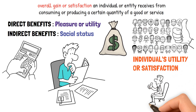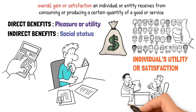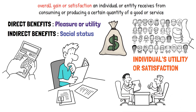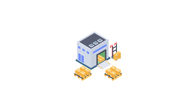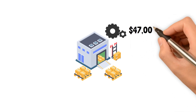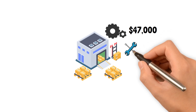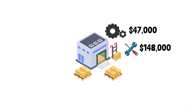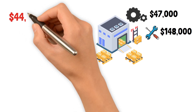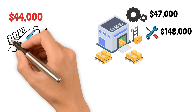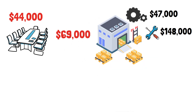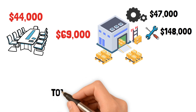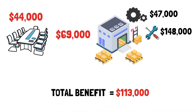However, it is vital to consider the total benefit when making decisions to ensure that the decision or action is in the best interest of the individual or entity involved. For example, assume a company intends to install new management software for its warehouse. The software will cost $47,000 and an additional $148,000 to install and implement. It is anticipated that it will save the company $44,000 through staff reductions and $69,000 in general inventory costs in the first year after installation.